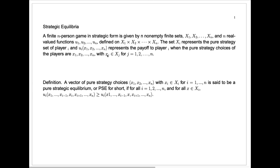We say that a vector of pure strategy choices — x1 through xn, where player 1 chooses x1, player 2 chooses x2, up to player n chooses xn — is said to be a pure strategic equilibrium, or PSE for short.